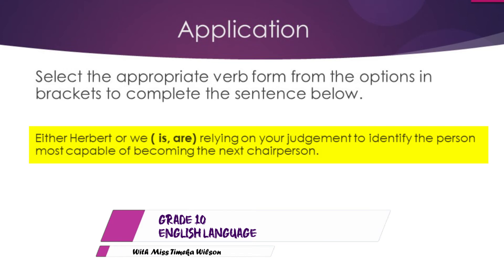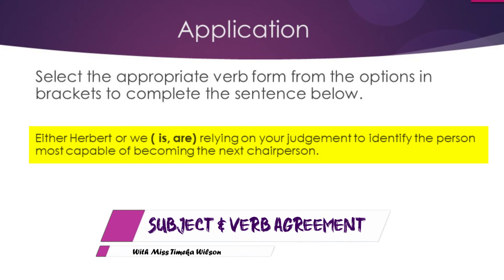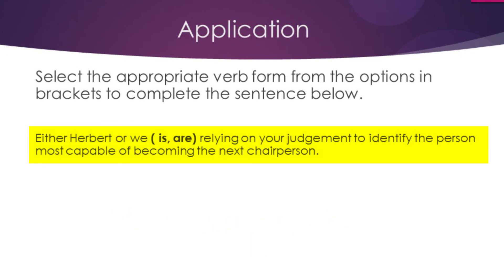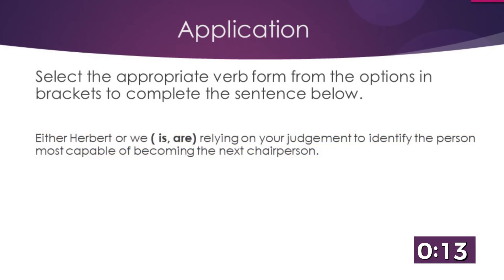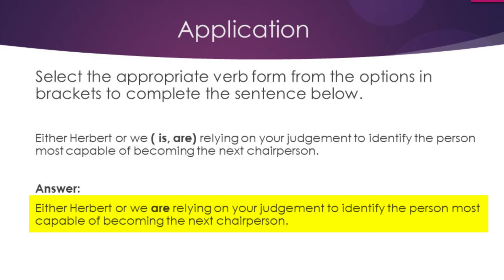Sentence four: either Herbert or we [is / are] relying on your judgment to identify the person most capable of becoming the next chairperson. Remember the rules regarding either/or — the verb agrees with the subject closest to it. 'We' is closest to the verb and is plural, so the answer is: either Herbert or we are relying on your judgment to identify the person most capable of becoming the next chairperson.